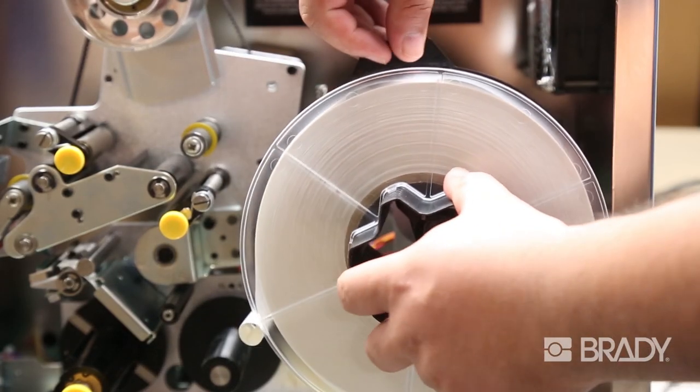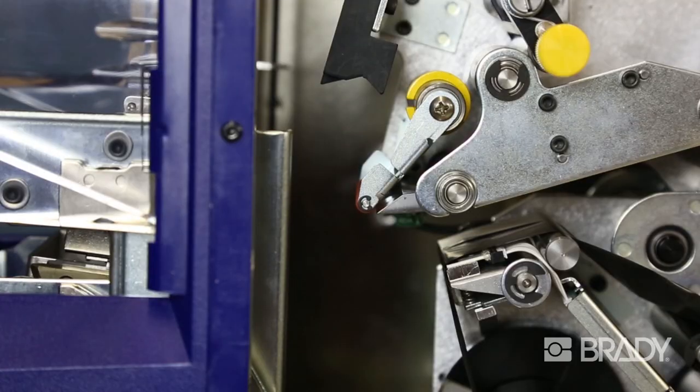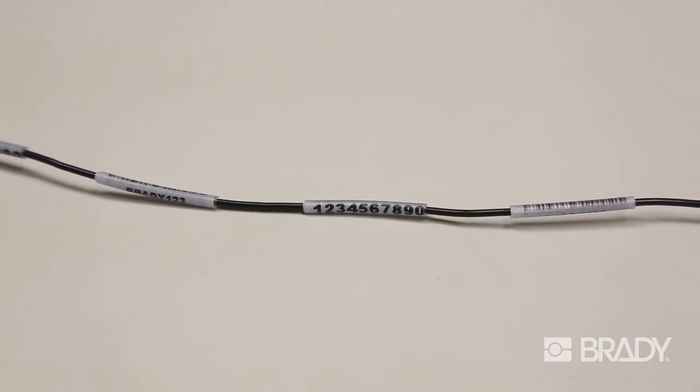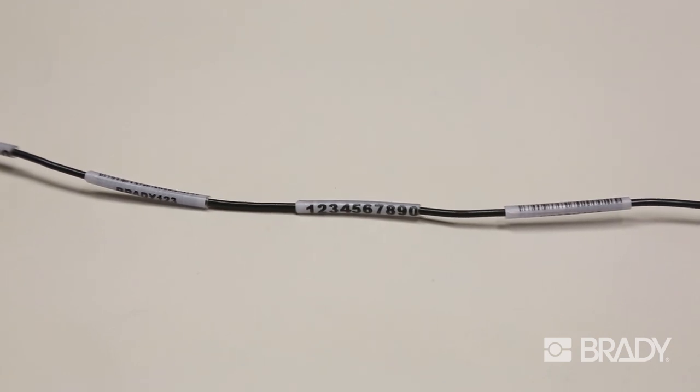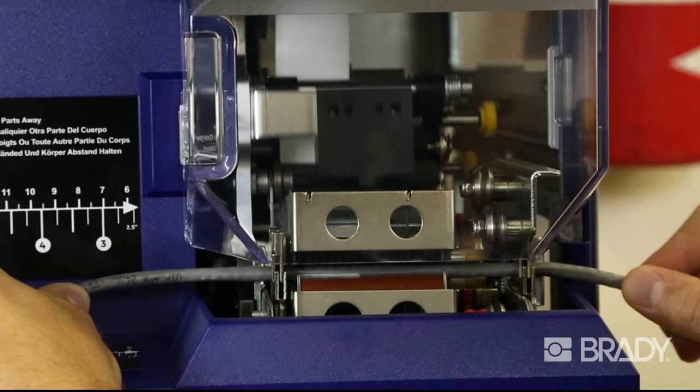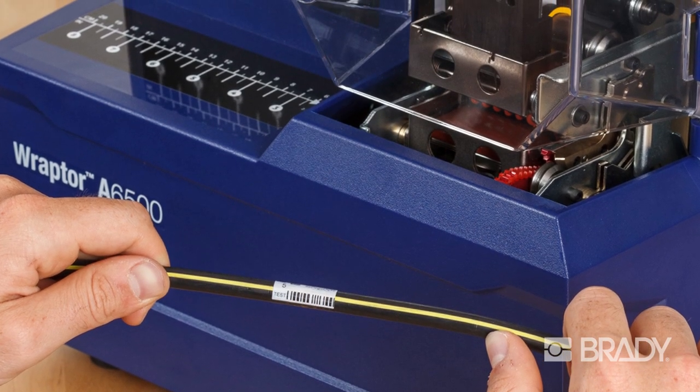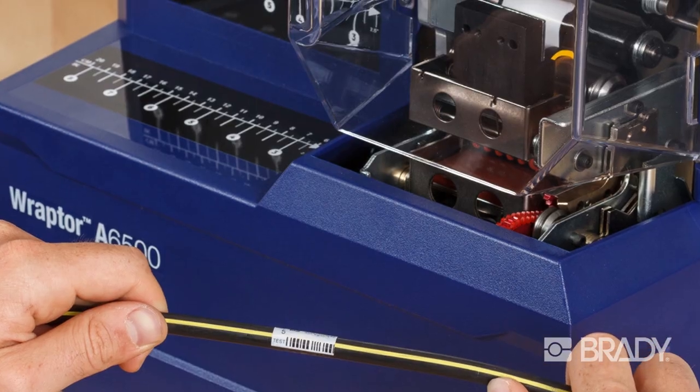It begins with quality, high performance materials, using Brady's own industry standard self-laminating vinyl and cloth materials. Add the permanence and clarity of 300 DPI thermal transfer printing, Raptor A6500's consistent tight wrap that limits spiraling, bubbling, and wrinkling, and you are assured a long-lasting label that is clear and easy to read.